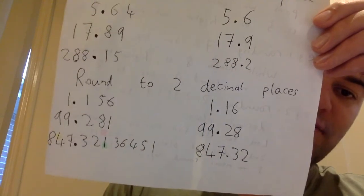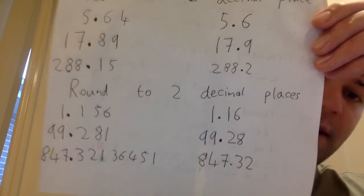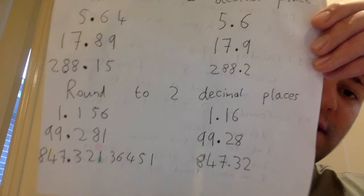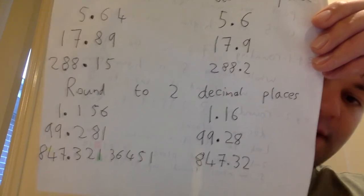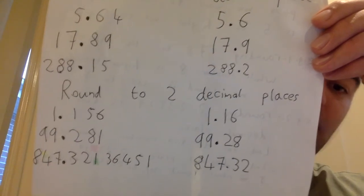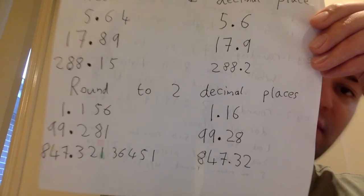And the last one, 847.32136451. So again, we just focus on the third number, the third decimal point, rather, which is a 3. So because of that, sorry, which is a 1. So because of that, we round down. So it stays as 847.32.